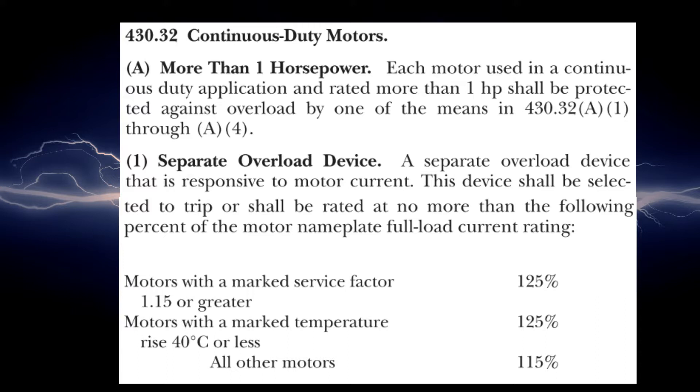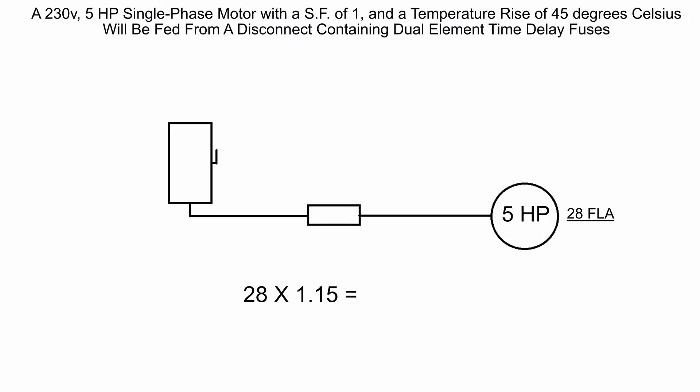It says motors with a marked service factor of 1.15 or greater would have 125 percent. However, we have a service factor of 1, so we don't qualify here. It also says motors with a marked temperature rise of 40 degrees Celsius or less is 125 percent. We have 45 degrees Celsius, so we don't qualify for these. We're going to be in the all other motor section at 115 percent. We'll take the full load amps of 28 times 115 percent or 1.15, which is going to give us 32.2 amps.